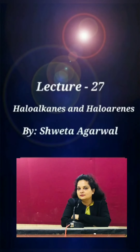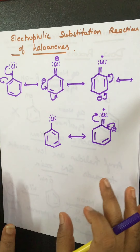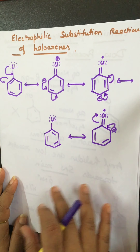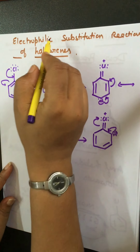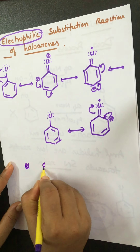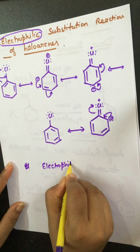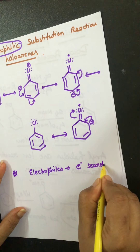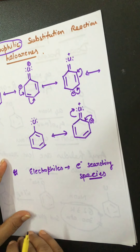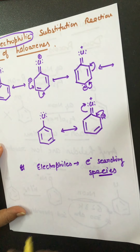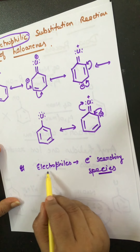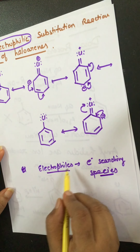Hello everyone, today we will start the next topic of haloalkanes and haloarenes. We will discuss the electrophilic substitution reactions of haloarenes. First of all, what are electrophiles? Electrophiles are electron-searching species. These species are positively charged or electron-deficient, and that is why they are called electrophiles.